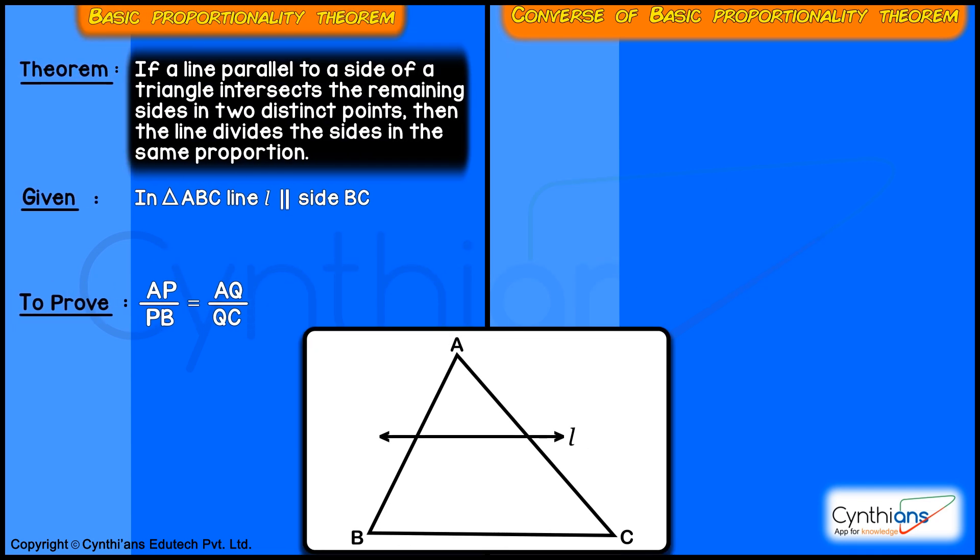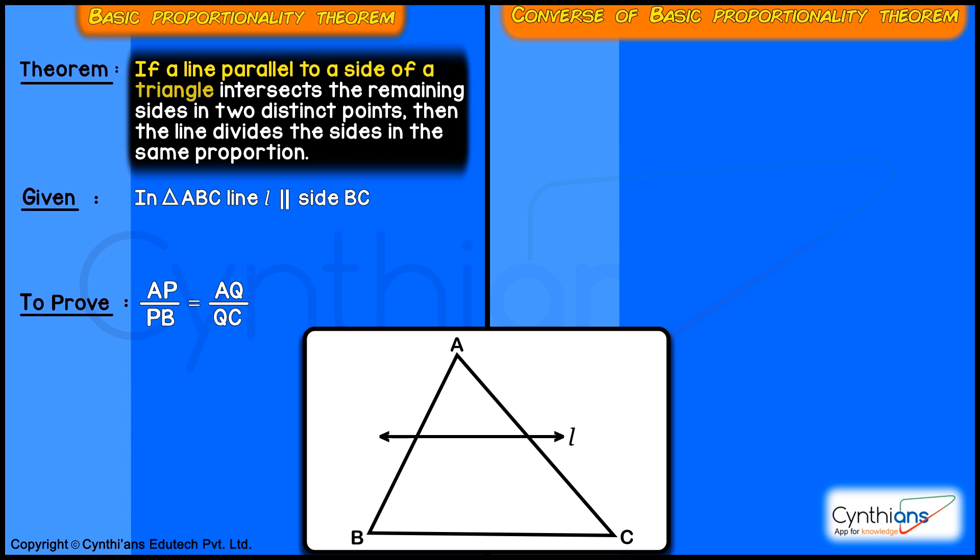As the statement says, if a line parallel to a side of a triangle intersects the remaining sides in two distinct points, then the line divides the sides in the same proportion.